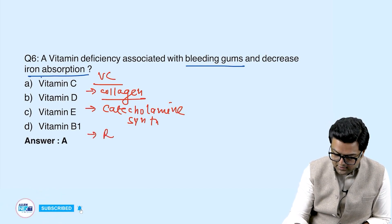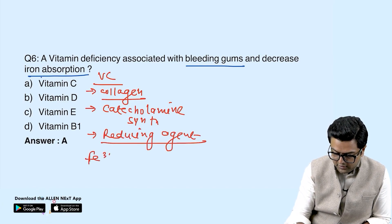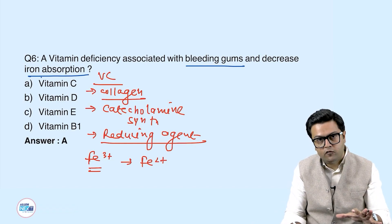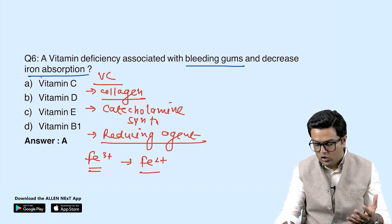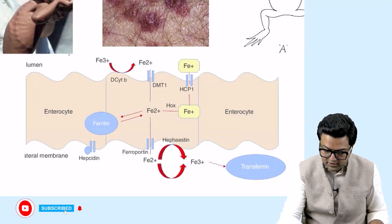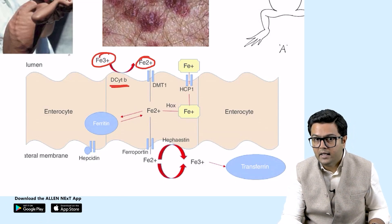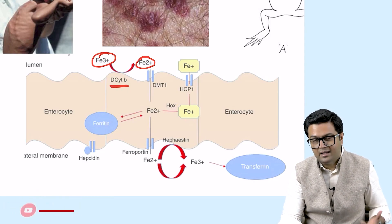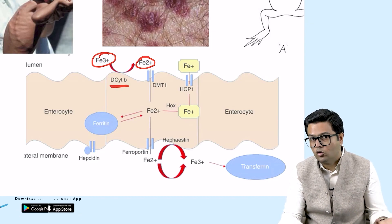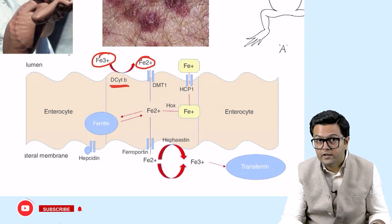Third, vitamin C acts as a reducing agent — it converts Fe3+ to Fe2+. Fe3+ found in food is not absorbed, but Fe2+ is absorbed. The enzyme duodenal cytochrome B reductase (DCytB) converts Fe3+ to Fe2+ by taking electrons from vitamin C.